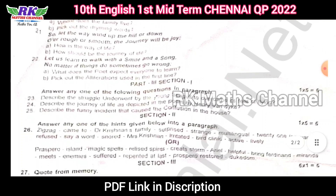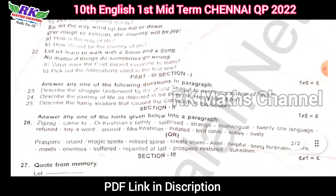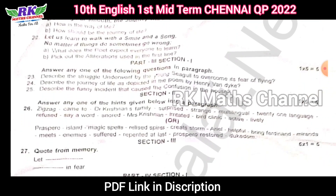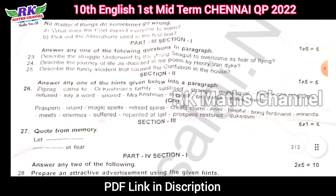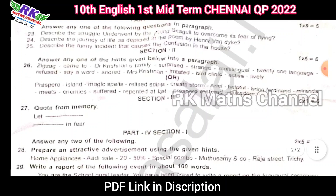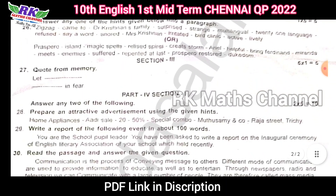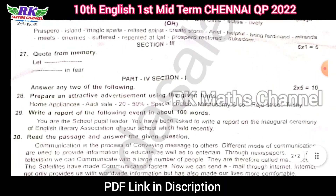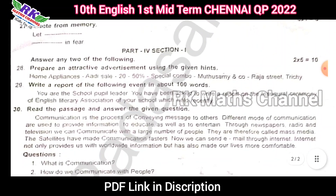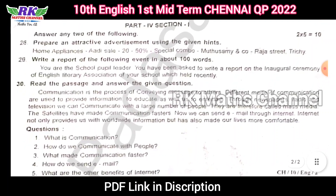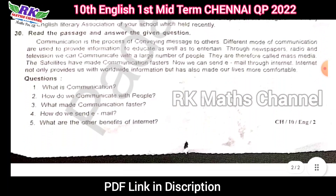Okay, in Part 3, Section 1 has a 5 mark question — 7 times 5 equals 5 marks. Section 2 is 5 marks. Section 3 is a memory point. Section 4 — any 2 questions are 10 marks.